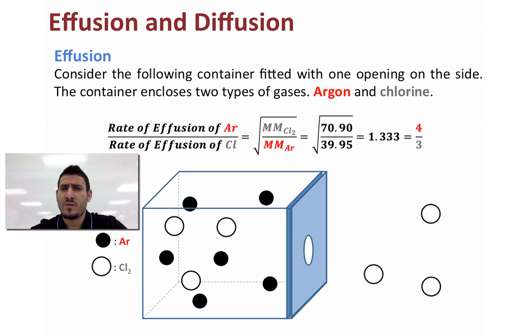Replacing the molar mass of chlorine and argon by their values, we get that this ratio is equal to 1.333 which is equal to the ratio 4 divided by 3, and this tells us if three particles of chlorine escape at the same time I will have four particles of argon will escape the container as well.